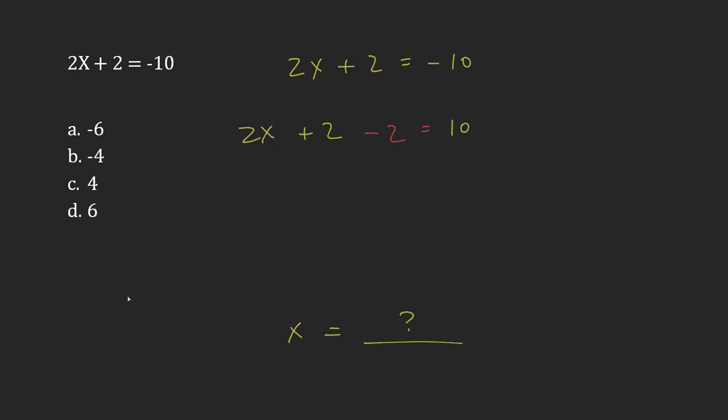And I have to do the same thing on both sides to make sure that I don't ruin the fact that 2x plus 2 is equals to negative 10. If I'm going to change one side, I have to change the other side. The positive and the negative 2 will cancel.